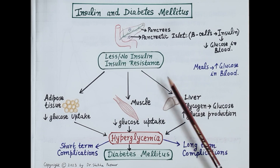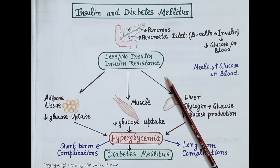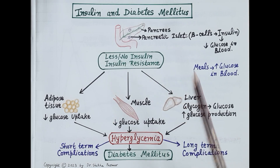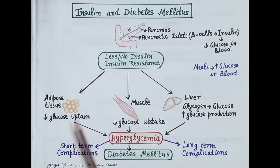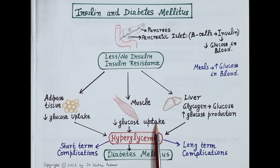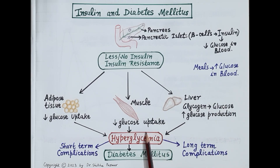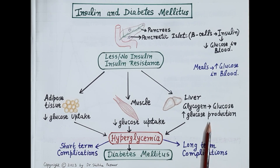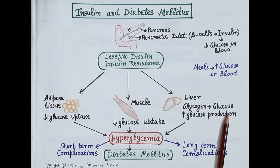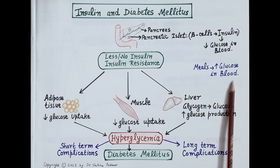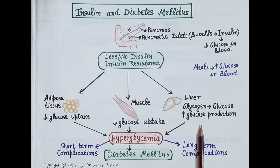Now let's see what happens due to lack of insulin secretion or insulin action. Cells of adipose tissue and muscles are not able to take up glucose from the blood, so glucose produced from food remains within the blood. In addition to this, glycogen stored in the liver is also broken down to glucose, so the liver also increases production of glucose. Thus glucose from the diet and glucose from the liver accumulates in the blood.